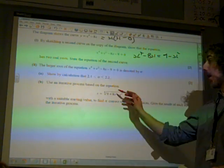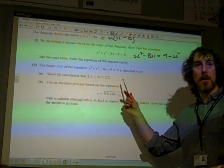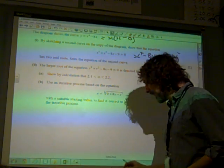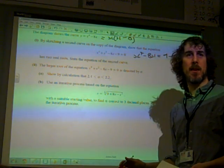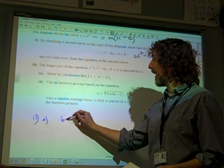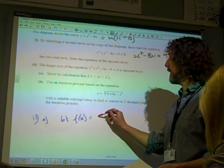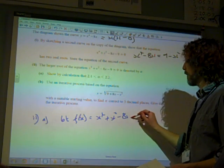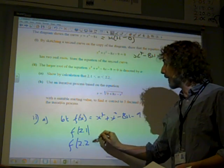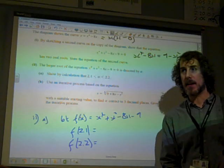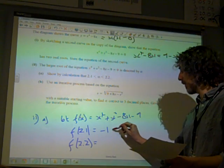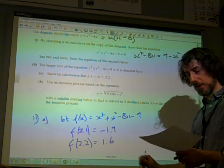Part two. The larger root of the equation is denoted by alpha, show by calculation that alpha is between 2.1 and 2.2. This is a really nice set-up of a change of sign question. We're going to write it kind of in full detail, we're maybe going to say let f of x be x to the 4 plus x squared minus 8x minus 9. f of 2.1, f of 2.2. We're going to calculate these. Stick it in your calculator.